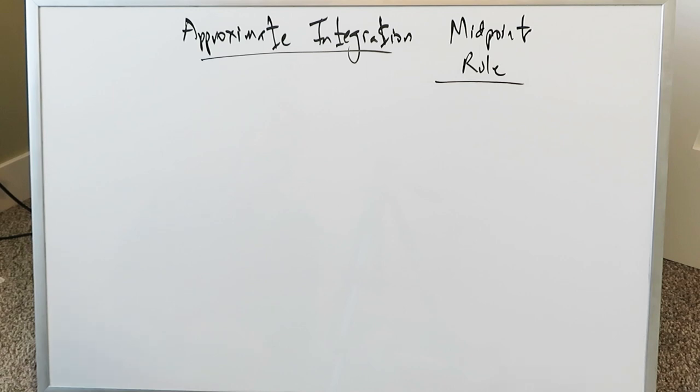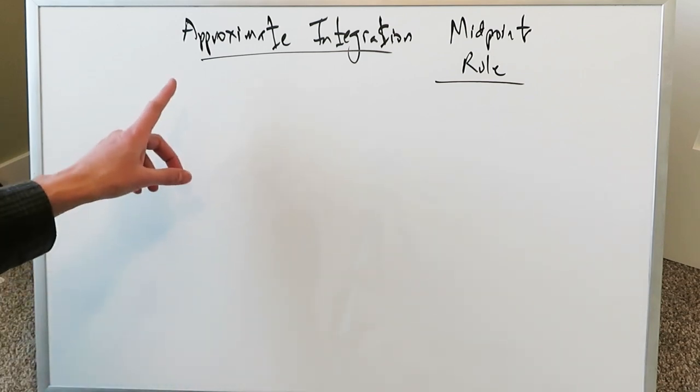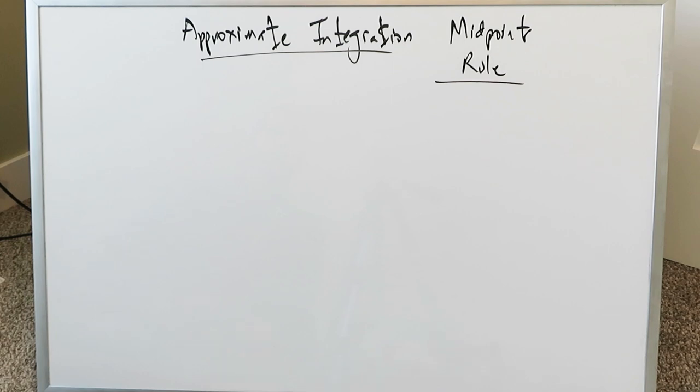There are instances where doing the traditional techniques of integration, whatever they might be, substitution, trigonometric integration, whatever or however those techniques might be, there are integrals out there for which you do not have a means by which you can integrate them. So you have to come up with some form of approximate integration.